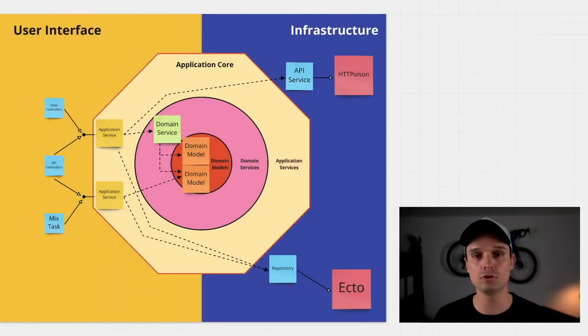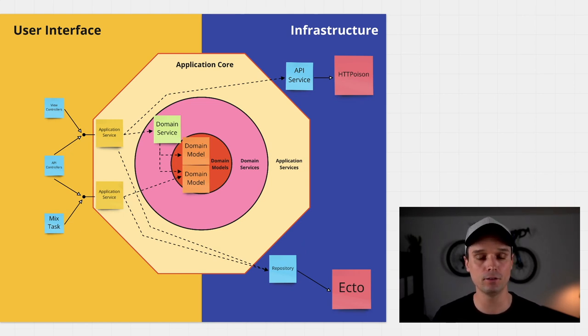Welcome to another episode of Peter & Code. My name is Peter, and this is the second part of the two-part series about the hexagonal and onion architecture and their combination, which is the explicit architecture. If you haven't seen the first part yet, please go back and watch it — it gives you the theoretical background and context you need to understand what I'm programming in this episode.